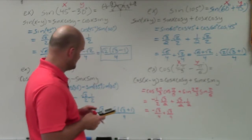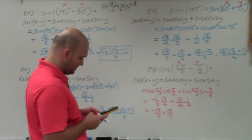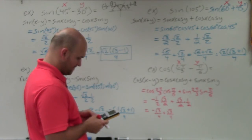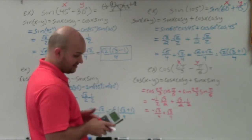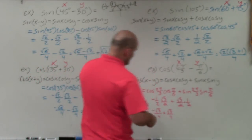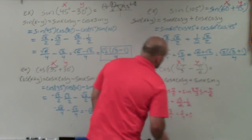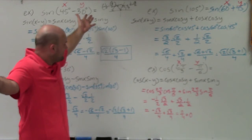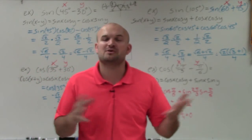Let's double-check by plugging the angle (2π/3 − π/6) into a calculator, and it is indeed equal to 0. So the final answer is 0/4, which equals 0. This was a new problem I picked without checking the answer beforehand, but the calculator confirms it. I hope you enjoyed using the sum and difference formulas for sine and cosine to evaluate for an angle. Thanks.